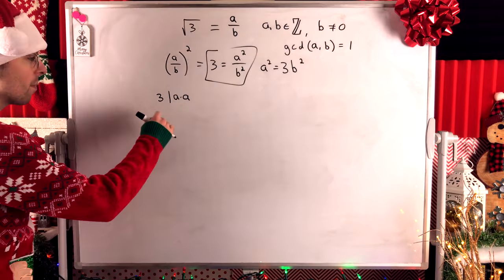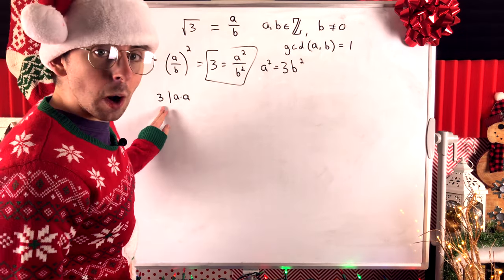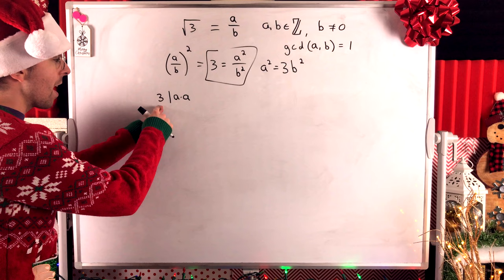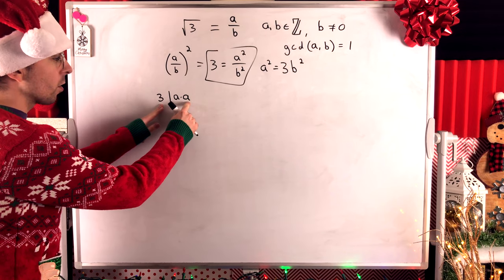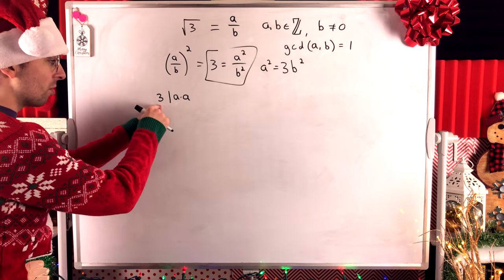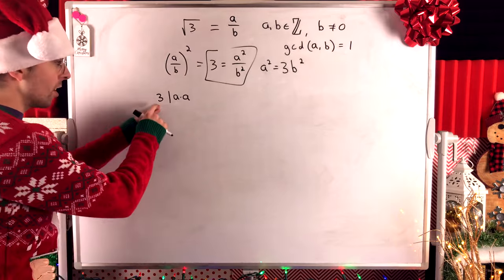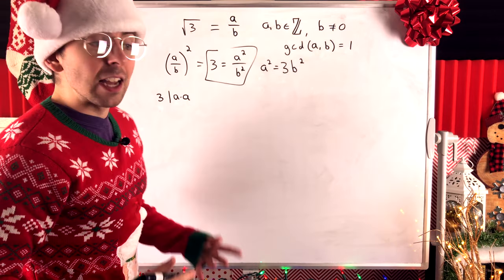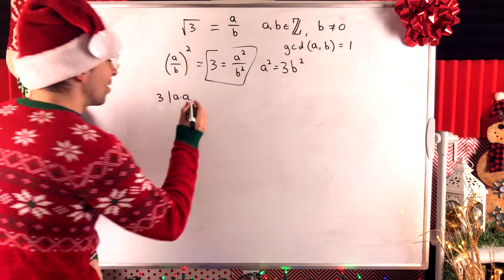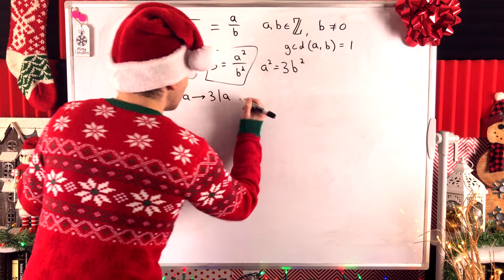Then, by Euclid's Lemma, if a prime number divides a product of two other numbers, then that prime must divide one factor or the other. In this case, both the factors are A. So, since this prime number divides A times A, by Euclid's Lemma, this prime number must divide A or A, which, of course, forces it to divide A. That's the only option. 3 must divide A.